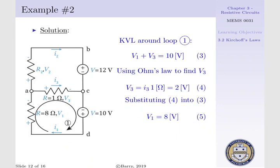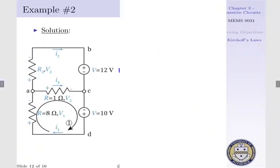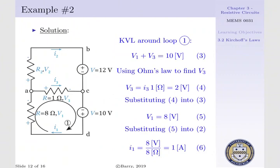Now that we know V1, we can substitute this back into our expression for I1, where I1 is equal to V1 per R1, such that I1 is equal to 8 volts per 8 ohms, or 1 amp.